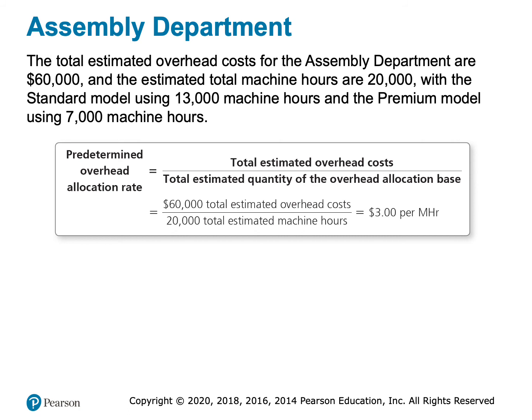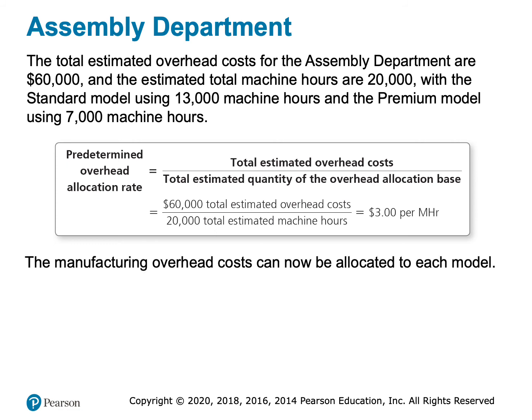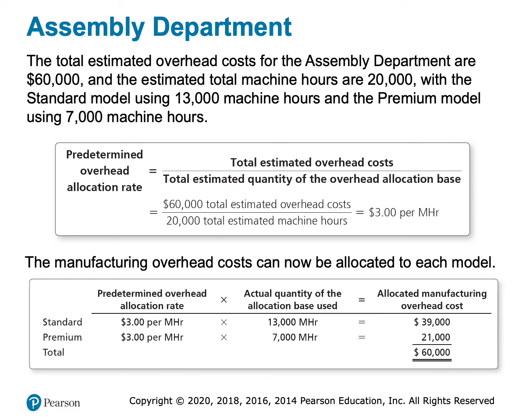We also need to allocate the assembly department's overhead to the two products. Out of the 20,000 machine hours, the standard model uses 13,000 hours, so it receives $39,000 of assembly overhead. The premium model uses 7,000 machine hours, so it receives $21,000 of assembly overhead. Notice those add up to $60,000 — matching the numerator, as they always must.